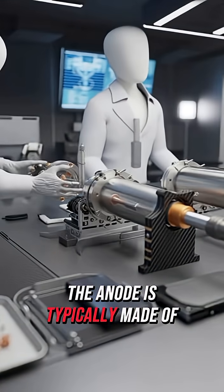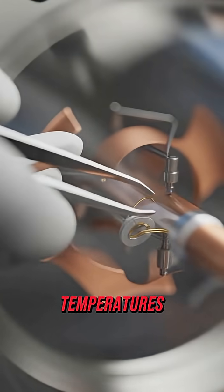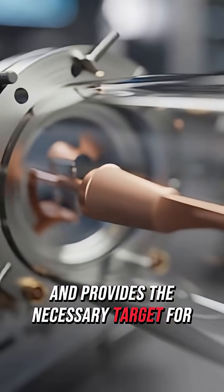The anode is typically made of a heavy metal like tungsten, because it can withstand the high temperatures and provides the necessary target for the electrons.